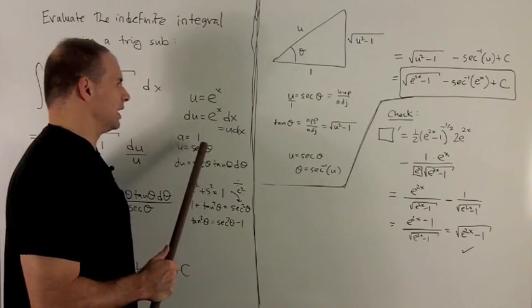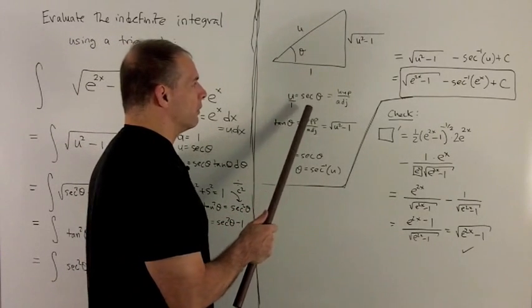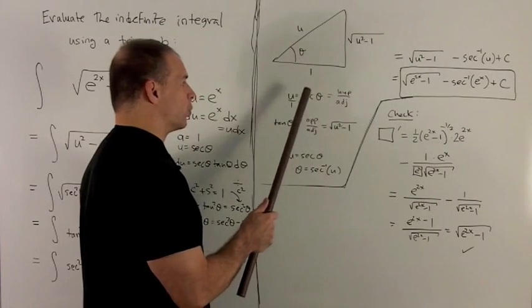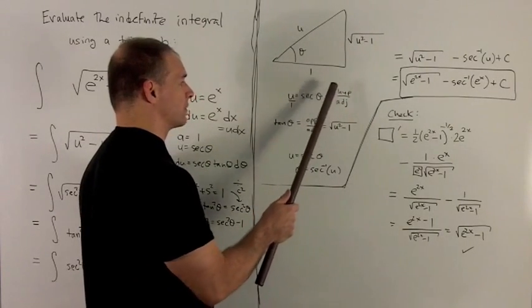If I look at what we substitute, we have u equals secant theta, so I'll write that as u over 1. Also note, for the right triangle, the secant is hypotenuse over adjacent. It's 1 over cosine. Cosine is adjacent over hypotenuse, so we just flip it over.